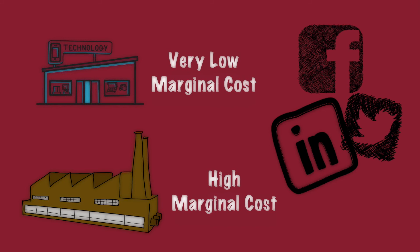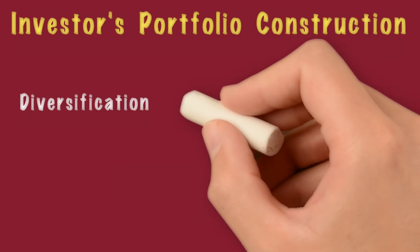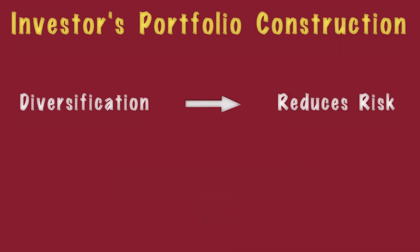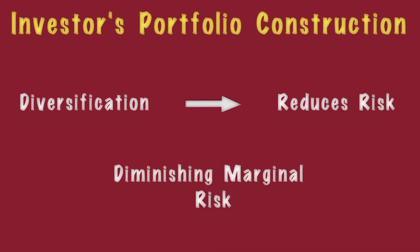Diminishing marginal utility also applies to portfolio construction. For an investor, diversification is very important for reducing risk. If you have all your money invested in a single stock, that's very risky. But the moment you add another stock, the risk comes down significantly. However, every additional stock in your portfolio brings down the risk in a diminishing order. Many studies have proved that after about 25 to 30 stocks, any additional stock does not reduce the risk at all.